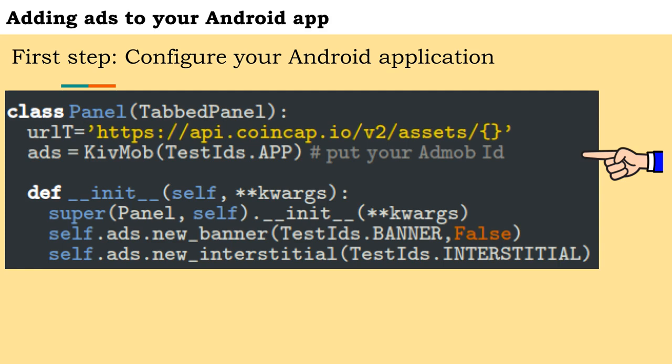This object can be created in different places. In our example we chose to create it in the class that represents the application screen, the panel class, in order to have greater control over the appearance of advertisements. We pass the IDs of each advertisement type in the class's init method, since these IDs must only be passed once in the application lifetime. In the case of the banner ad, we pass the argument false to indicate that the banner is displayed at the bottom of the screen. If we pass true the banner will be displayed at the top of the screen.